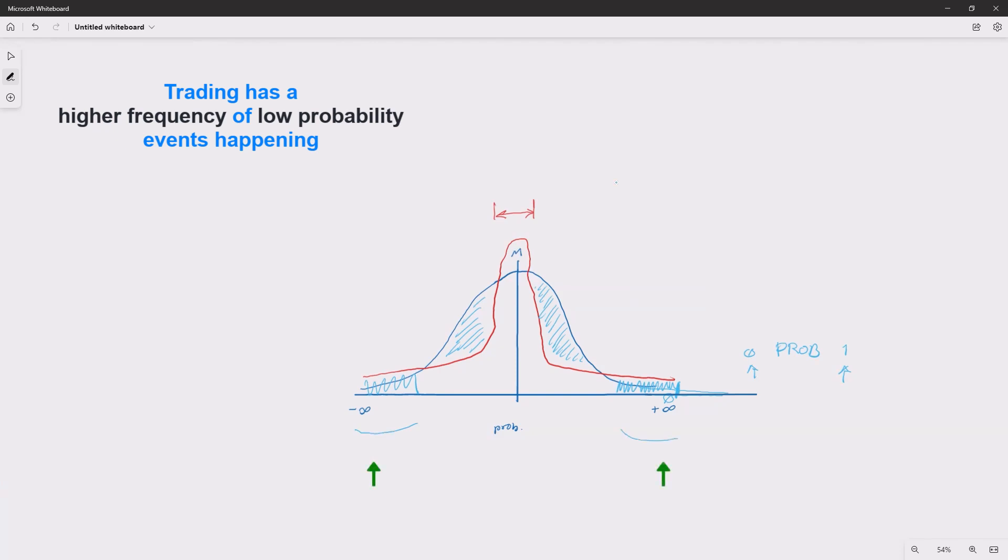So things that are happening here at these ends - these are really rare cases because you have the average here and then you have one, two, three, four standard deviations. So these are standard devs going up and down - one, two, three.